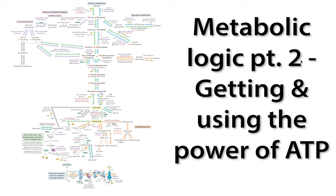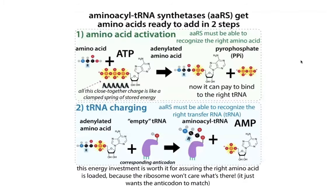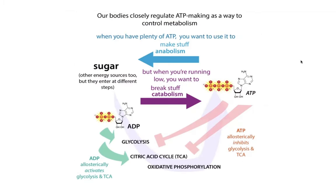It's not logical to try to memorize all of the pathways and steps of metabolism, but it is logical to focus on the logic of metabolism. So today: metabolic logic part two — how ATP gets its power, how we use that power, how we regulate that power, how we use ATP and AMP and ADP to control other things, and how we stock up when we're running low.